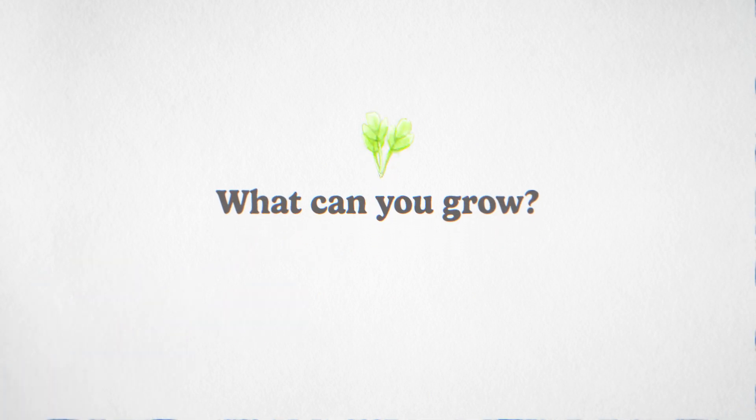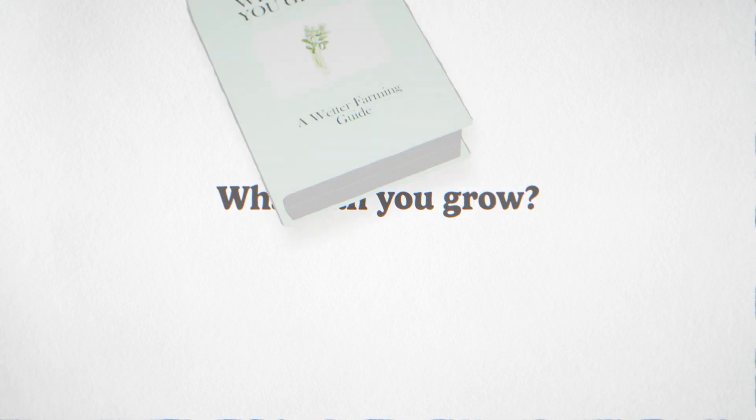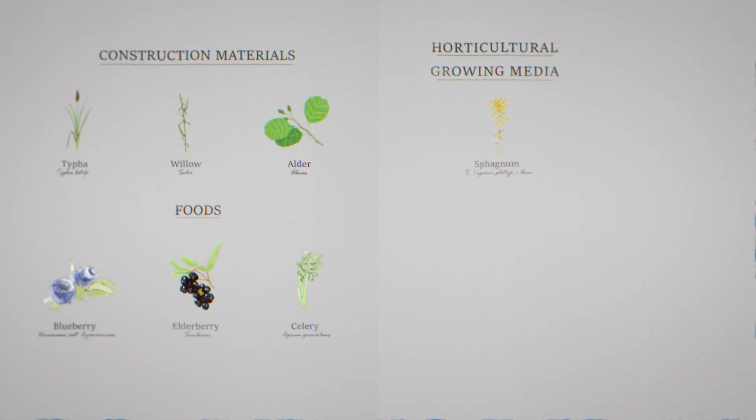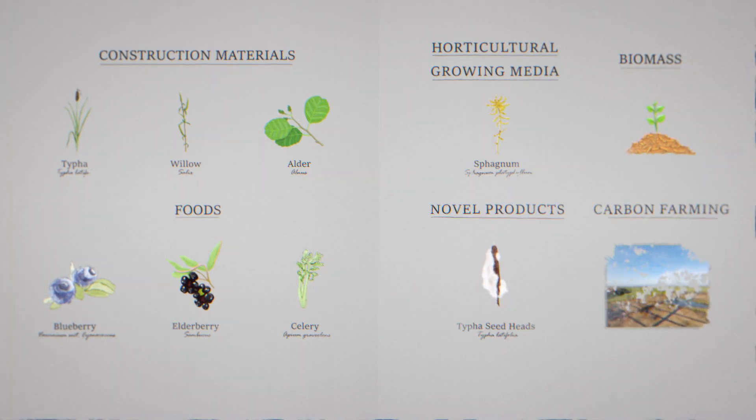Wetter land provides unique growing conditions, meaning you might have to rethink not only how you grow, but what you grow. Here are a few examples of what you can use these wetter conditions for: construction materials, various foods, horticultural growing media, biomass for energy, novel products, carbon farming, some are grazing land for livestock.